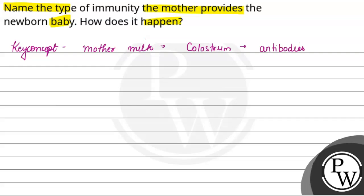So this provides immunity. The type of immunity which the baby gets from the mother's milk is passive immunity — passive immunity.